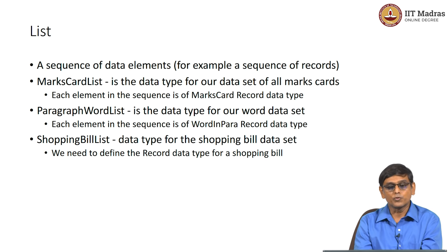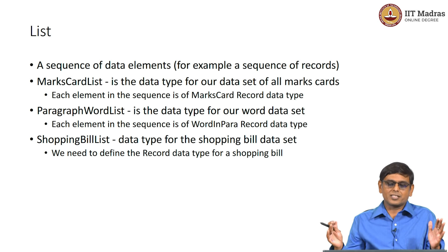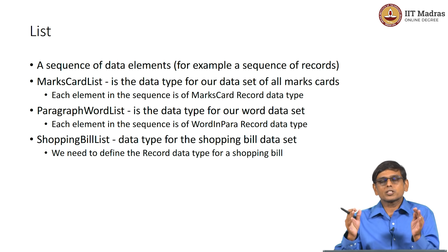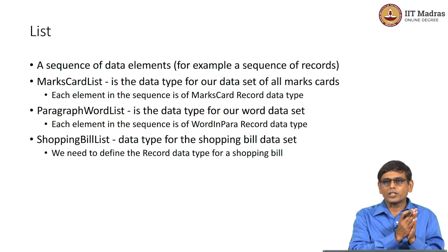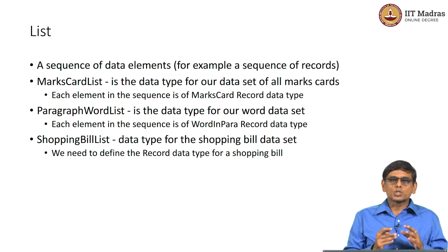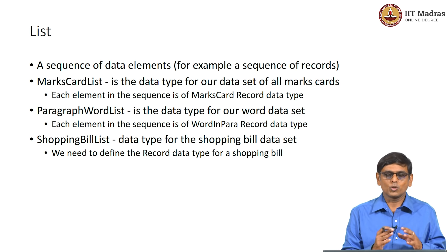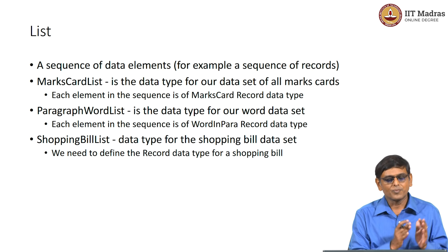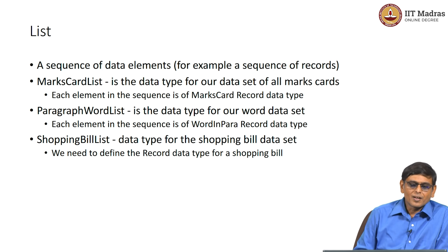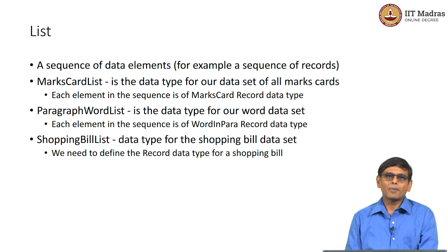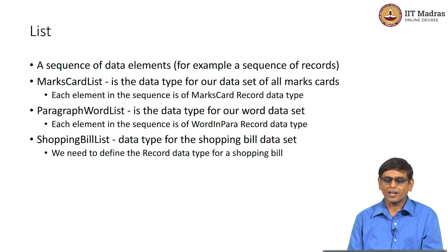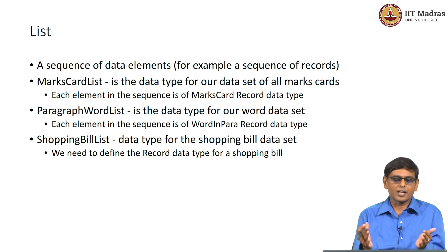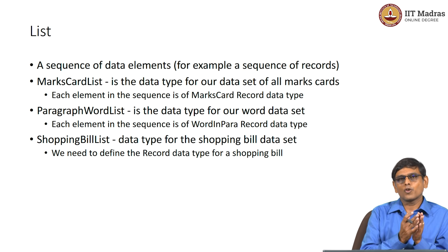Now if you look at the set of all the marks cards, if I had a bunch of all the marks cards, is there a data type that can represent that? For one card I can write a record, but for the entire list of cards I need something else. A sequence of data elements is called a list — basically just a sequence, like a string is a sequence of characters, so a string is also in principle a list. A marks card list is just a sequence of marks card record data types. A paragraph word list is just a sequence of word-in-para record data types. The set of all the marks cards is a marks card list.